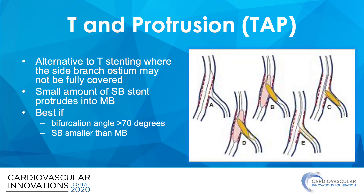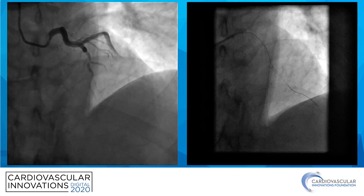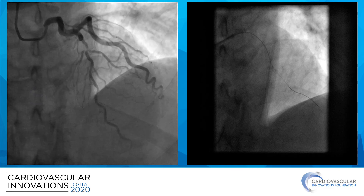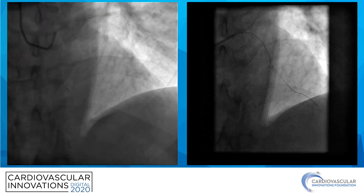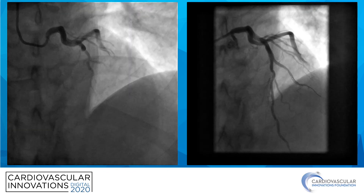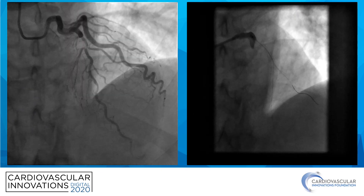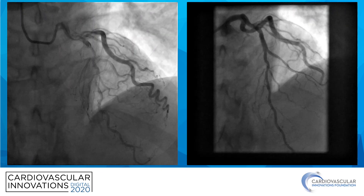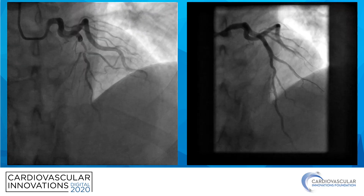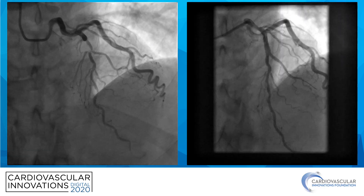The T&P protrusion technique is an alternative to T stenting where the side branch ostium may not be fully covered, so a small amount of the side branch stent protrudes into the main branch. This is best if the bifurcation angle is greater than 70 degrees and the side branch is smaller than the main branch. Here is a case of a patient who presented with acute coronary syndrome and had a high-grade lesion at the LAD and diagonal branch bifurcation with a bifurcation angle of almost 90 degrees, which was easily treated with a T&P protrusion technique.